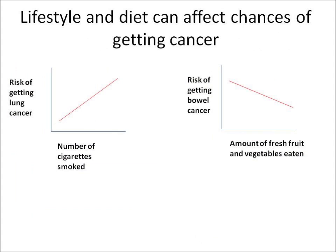In your exam you might get a question where you have to analyse some data which suggests a link between lifestyle and diet and the chance of getting cancer. For example, the graph on the left shows that as you smoke more and more cigarettes there becomes a greater risk of getting lung cancer. The graph on the right shows that as you eat more and more fresh fruit the chance of getting bowel cancer becomes less. You could get any kind of graph to do with this, so you need to be aware that you may have to answer a question on it.